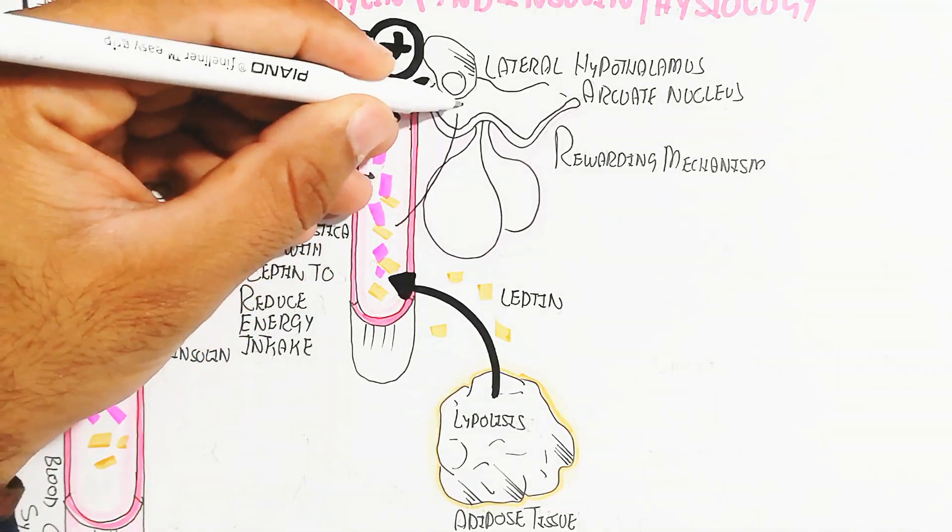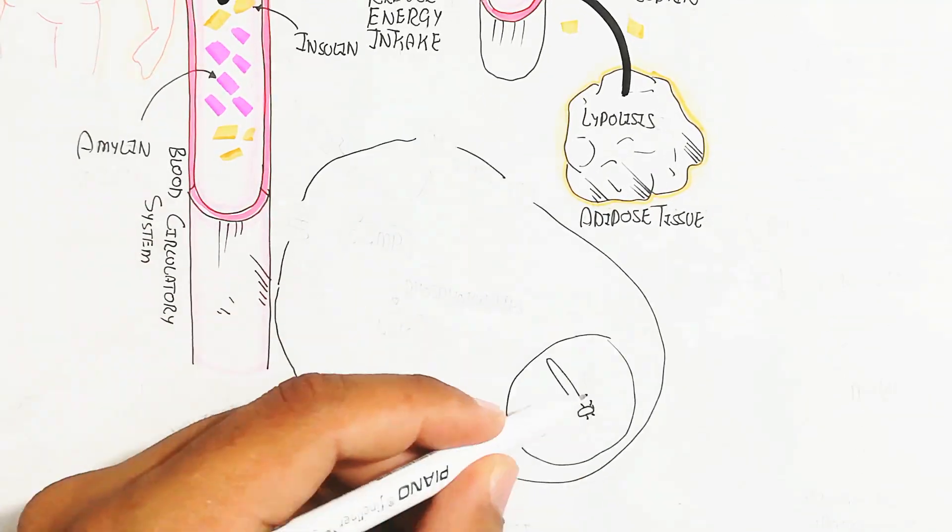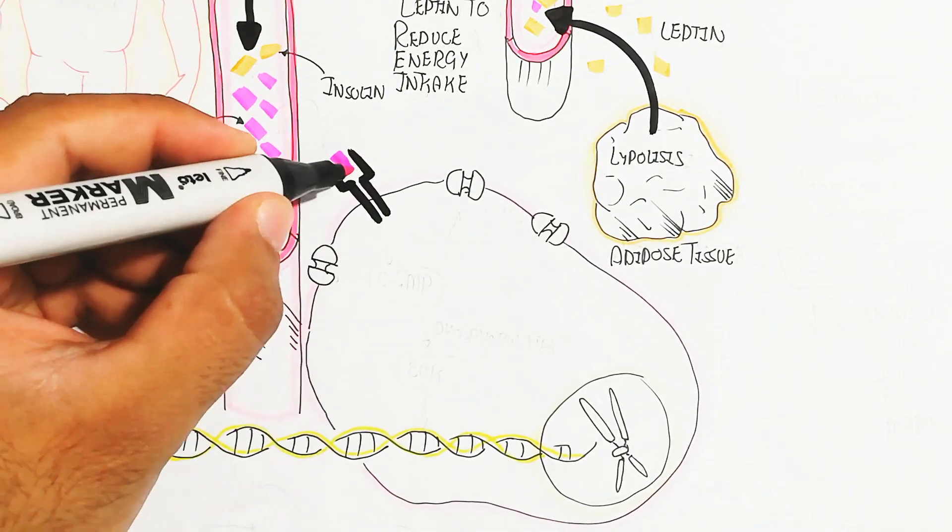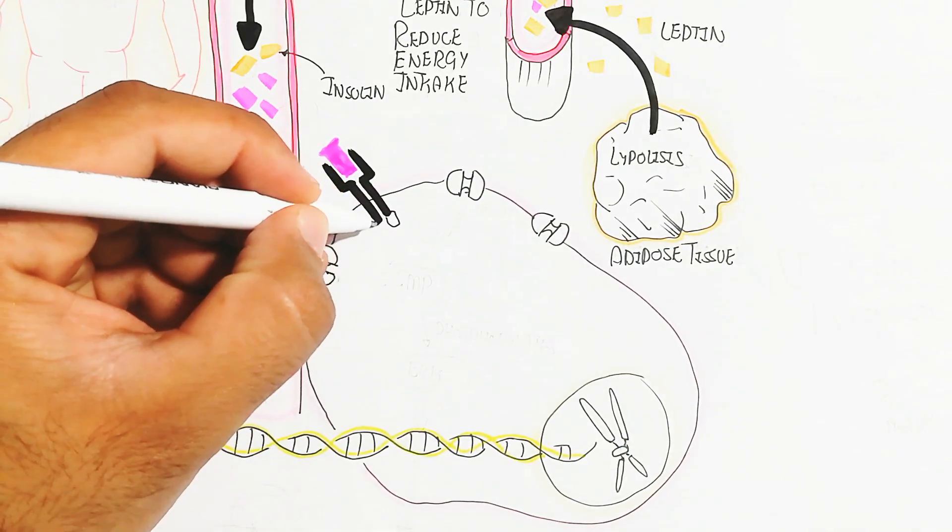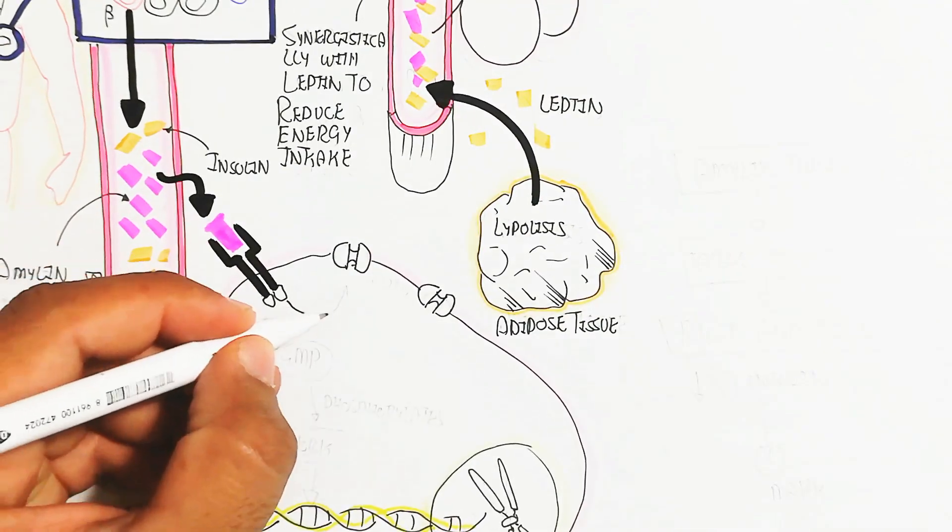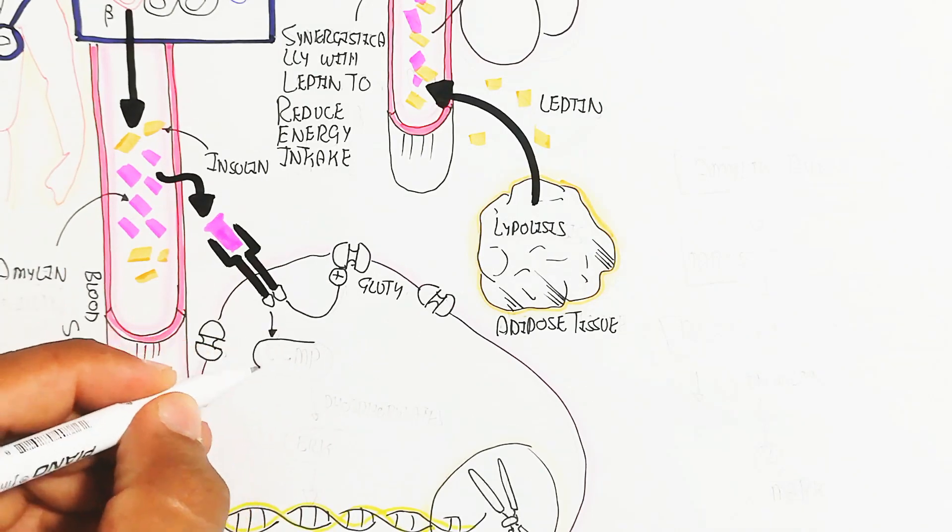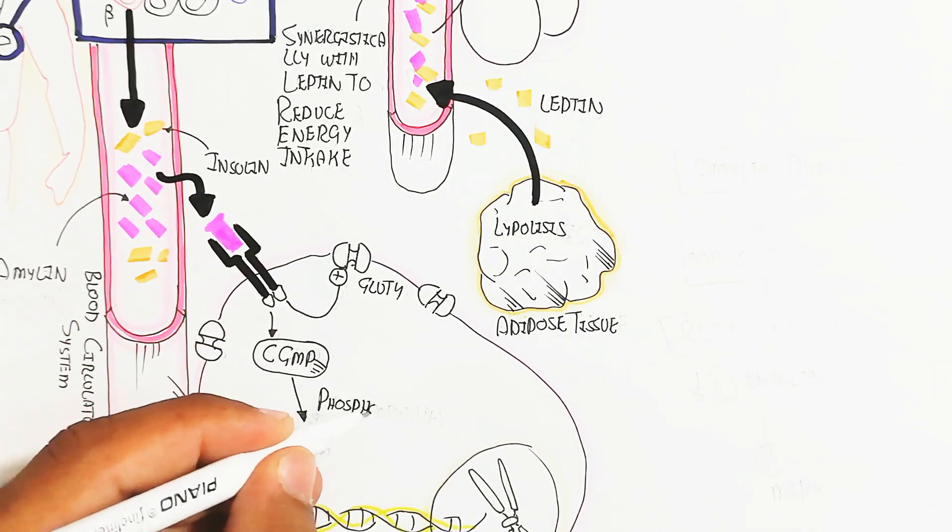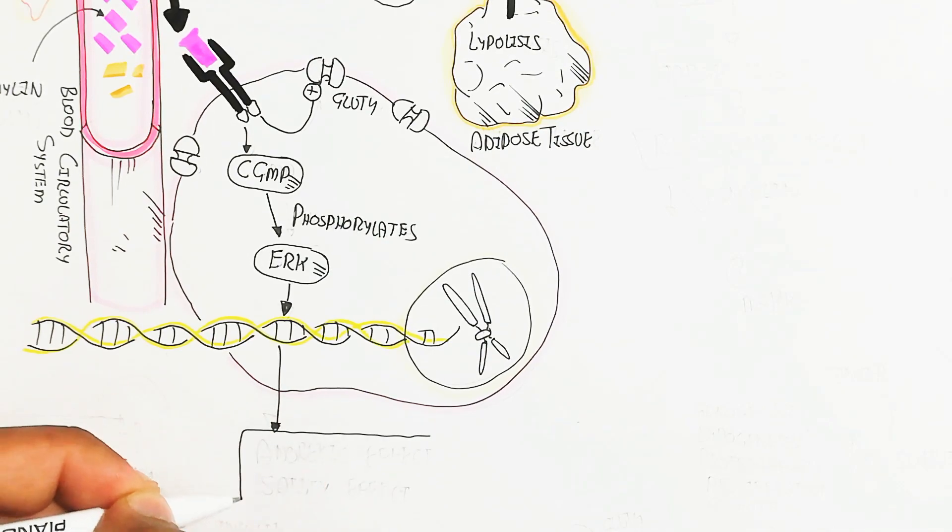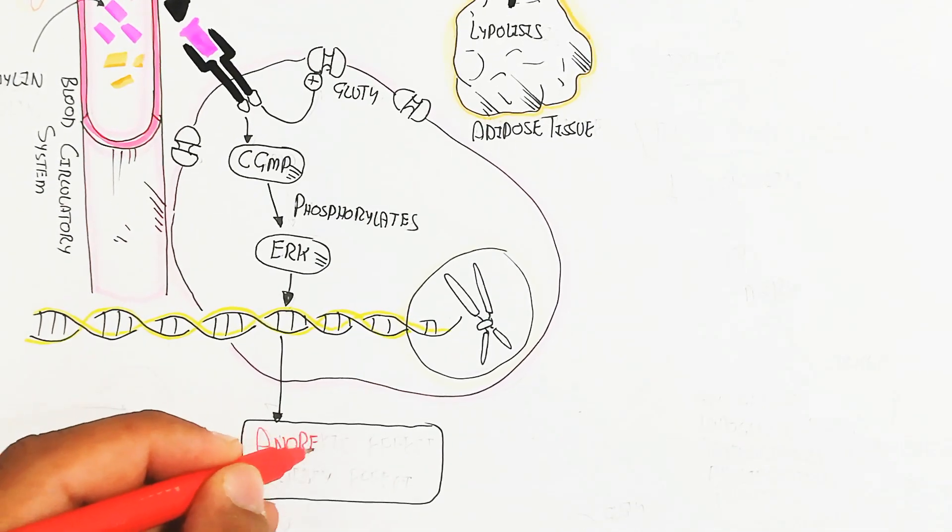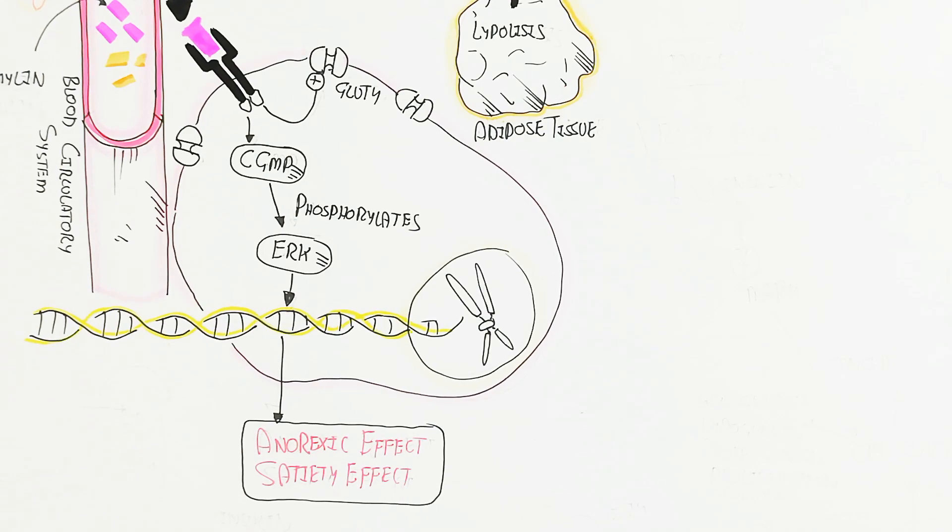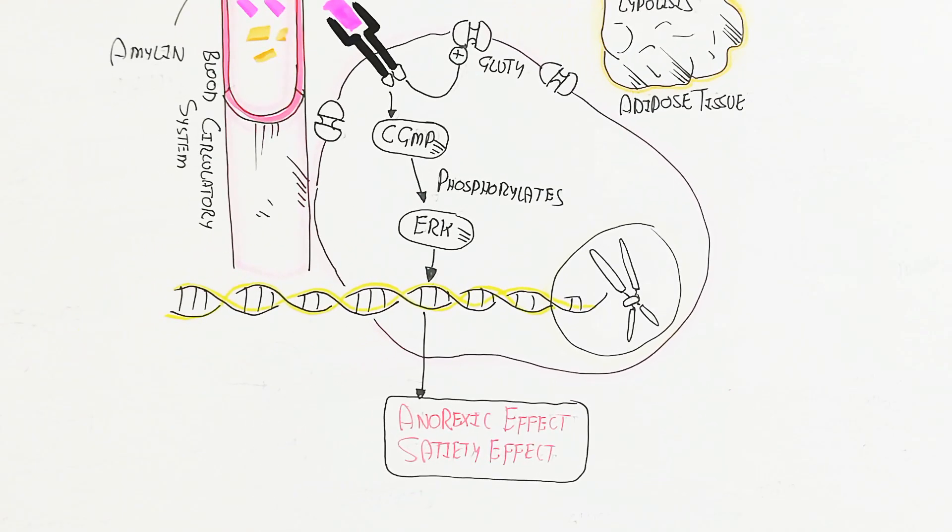Let's understand the target of amylin on cells. Several tissues are involved, like muscle, adipose tissue, and many more. When amylin binds with the amylin receptor, the insulin receptor (a tyrosine receptor) will trigger the GLUT4 channel. Also, cyclic GMP will trigger phosphorylation of ARC protein. This cascade of phosphorylation leads to gene activation.